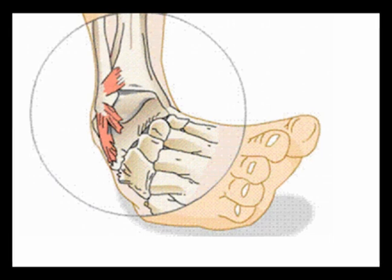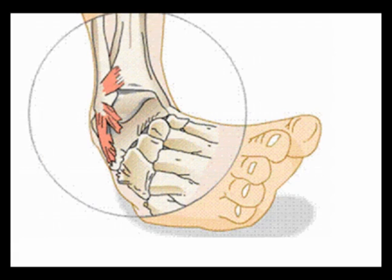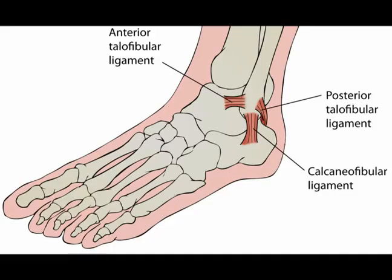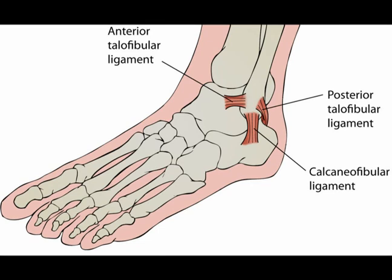Symptoms of traumatic ankle sprains begin immediately. Sharp pain is felt instantly, and it is followed by a lack of motion, limited strength, inability to bear weight, swelling, and bruising. Symptoms of a severe ankle sprain may persist for months, and if not treated properly, it can lead to instability in the ankle joint.